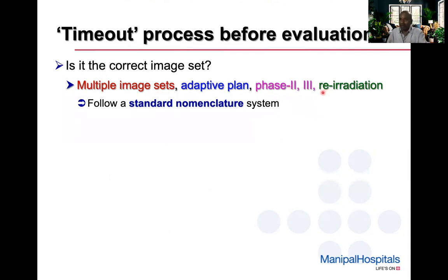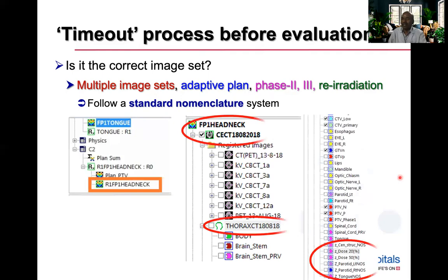Follow a standard nomenclature system for everything, including contours. When physicists develop their own contours for optimization purposes, place them last by adding the character 'Z' at the beginning. Use naming conventions like FP1 for 'final plan 1', CCT for the image data set, and R1 when the patient comes for re-irradiation.